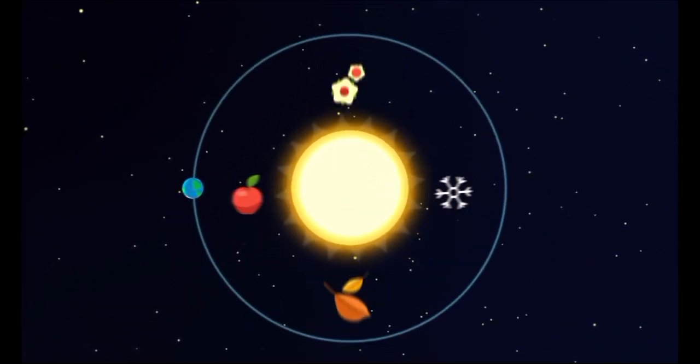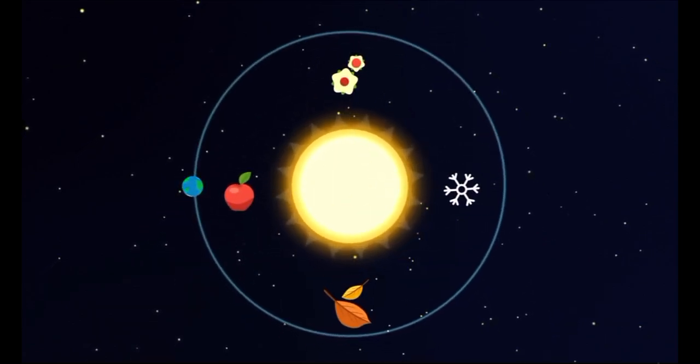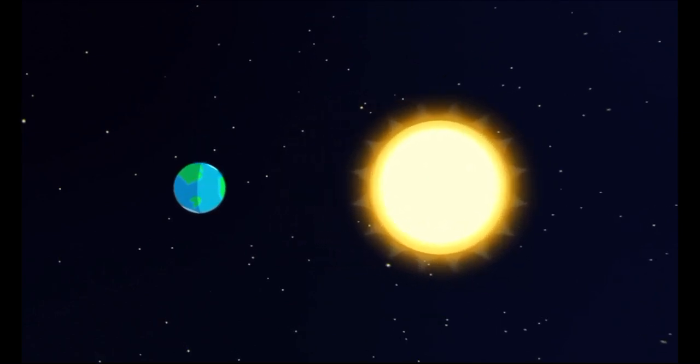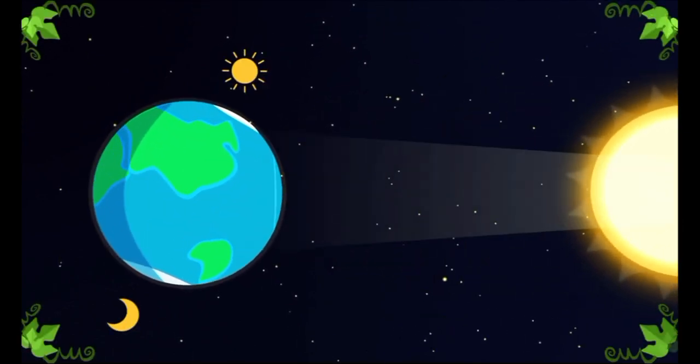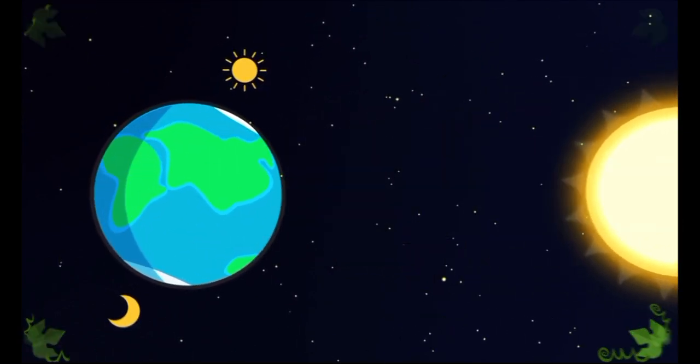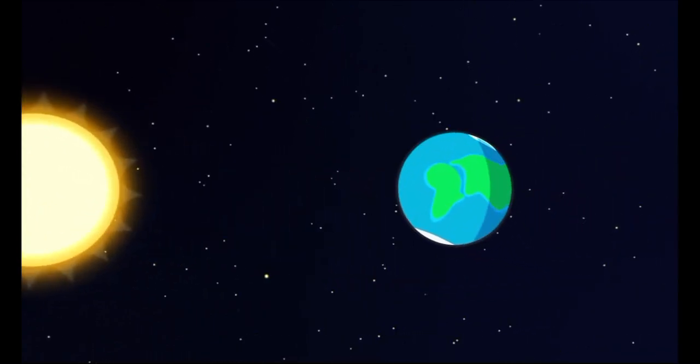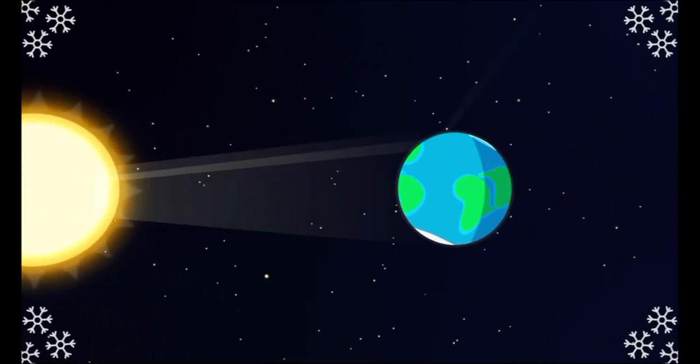Because of this tilt, the Earth positions its sides toward the Sun differently in each season. When solar rays fall straight, it gets hotter and summer comes. If the rays fall at an angle, the heat is lower and winter comes.